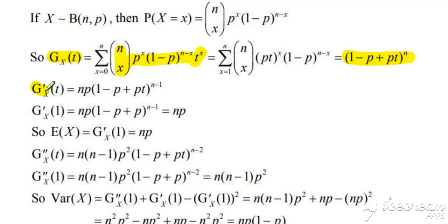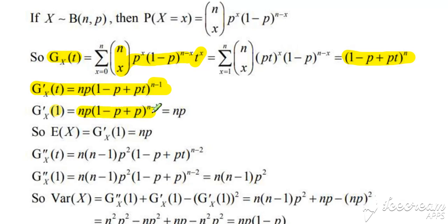To find the expectation, we differentiate the PGF. Using the chain rule, we reduce the power by one and multiply by p and by n. If we then substitute t=1 into that expression, the p's cancel, leaving one to the power of something which equals one, and we simplify to get n times p. That's our proof that the expectation of the binomial equals np.